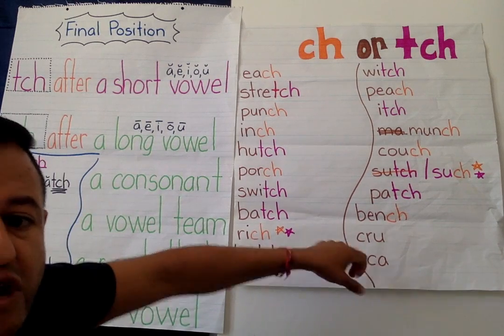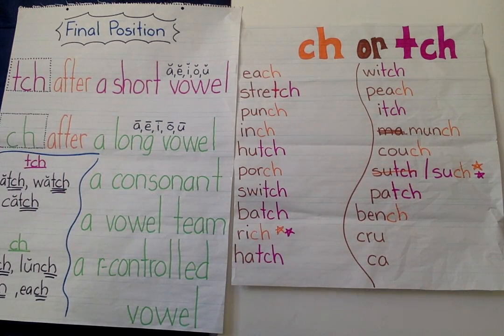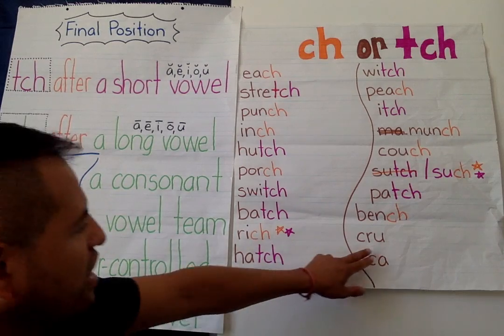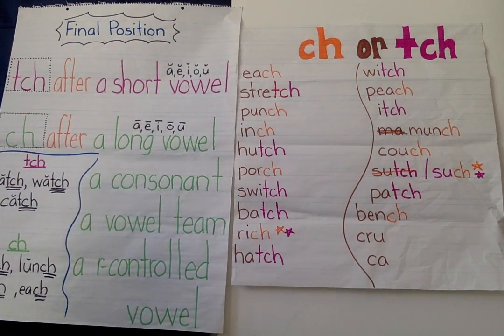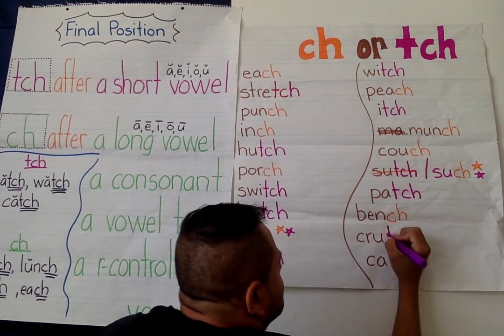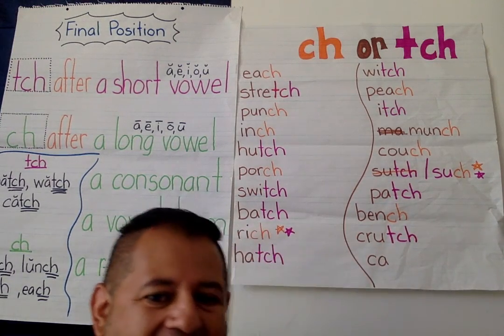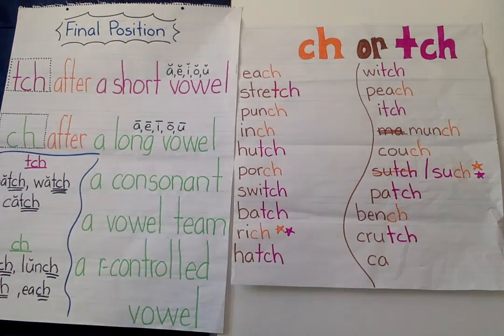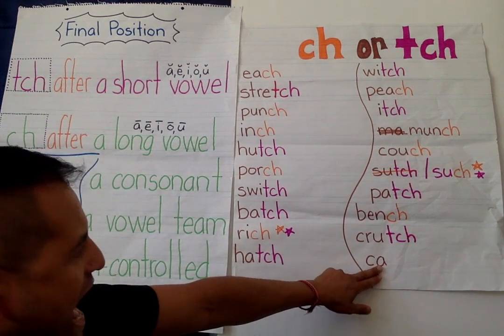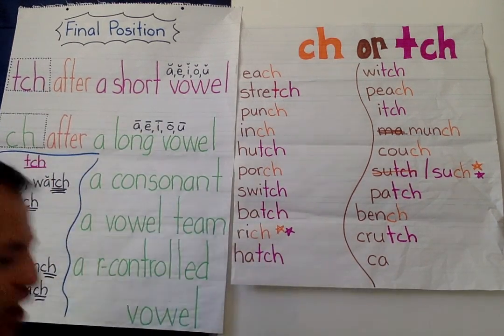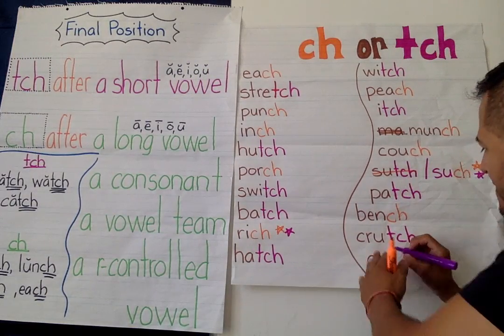"Crutch" — sometimes if you hurt your legs. C-R-U — the U, there's another T-C-H. And then C-A — "catch." I'm going to catch the ball. A, short vowel — our final T-C-H. "Catch."